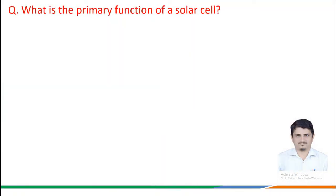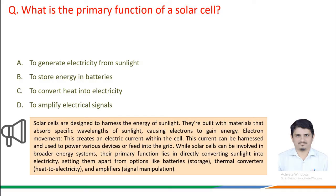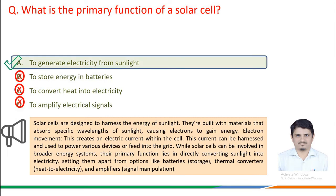What is the primary function of a solar cell? Solar cells are designed to harness energy from sunlight, built with materials that absorb specific wavelengths, causing electrons to gain energy and creating an electrical current. Their primary function is directly converting sunlight into electricity, setting them apart from batteries (storage), thermal converters (heat to electricity), and amplifiers (signal manipulation). The correct answer is to generate electricity from sunlight.